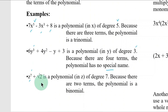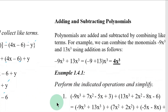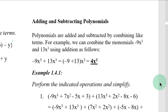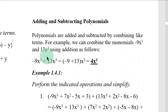A binomial has two terms lang. Adding and subtracting polynomials — these are the operations on polynomials. Polynomials are added and subtracted by combining like terms. For example, we can combine the monomials negative 9x cubed and 13x cubed using addition. If you recall the previous topic on grouping symbols, some of those operations were actually already adding or subtracting.